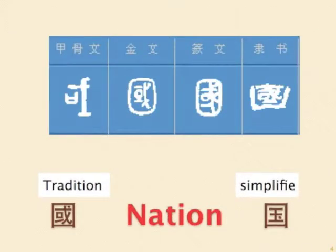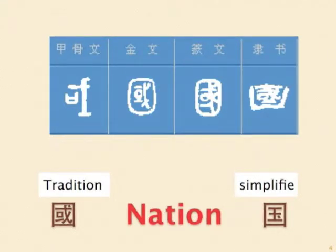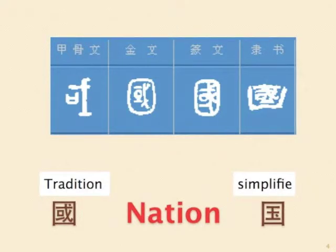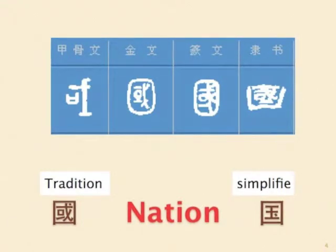Next word: nation. The word originally represents a guard holding a weapon defending his territory. Later on, a circle and then a square was added to the outside, and the inner part was complicated with more strokes, which became the traditional form. The simplified form then simplified the inner part, showing a king staying inside the square, and a point was added.